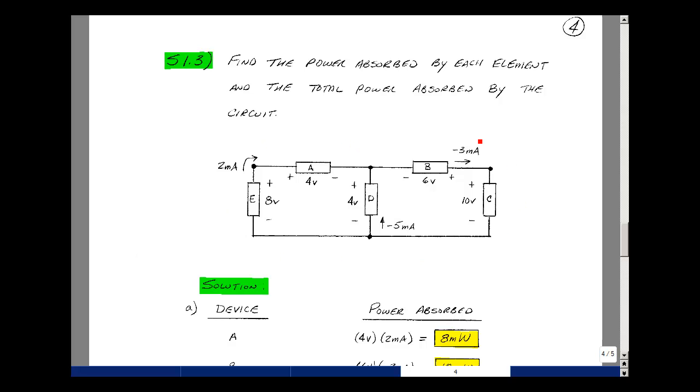Given the circuit shown below with the voltages and currents labeled, let's find the power absorbed by each element and the total power absorbed by the entire circuit.